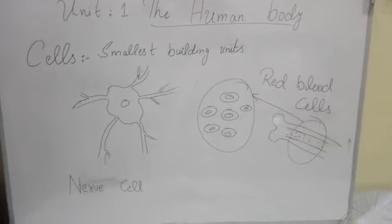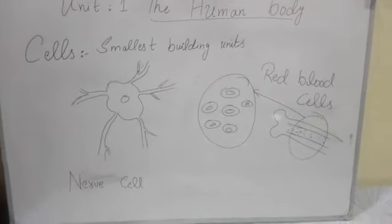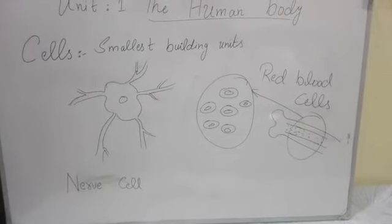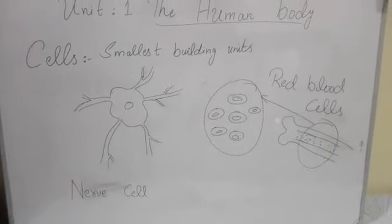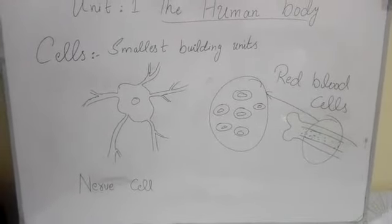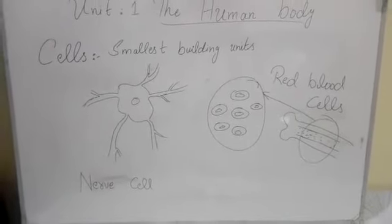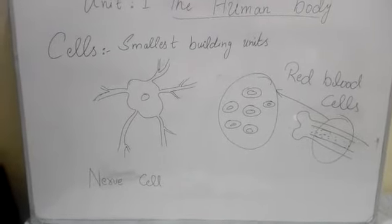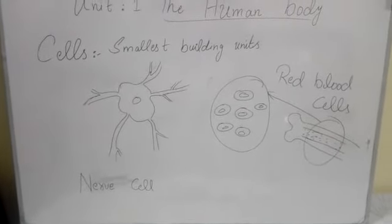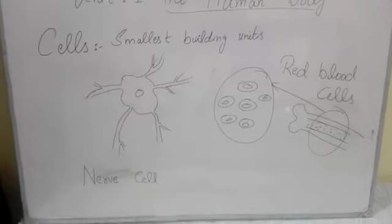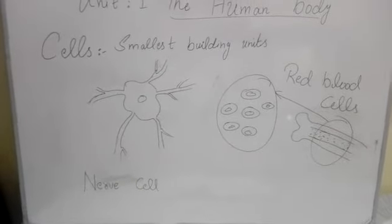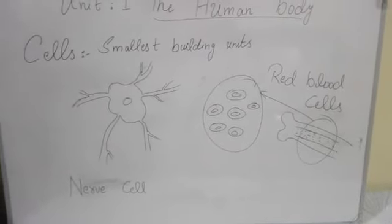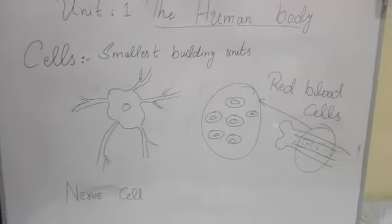Now let's look at different types of cells and their functions. First, we have nerve cells. The function of nerve cells is to convey messages from the brain to our whole body.